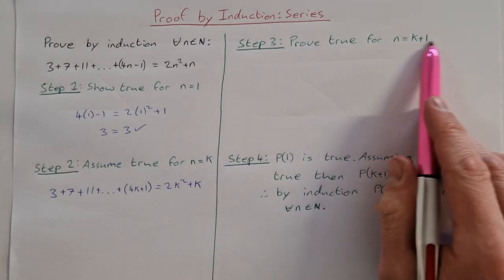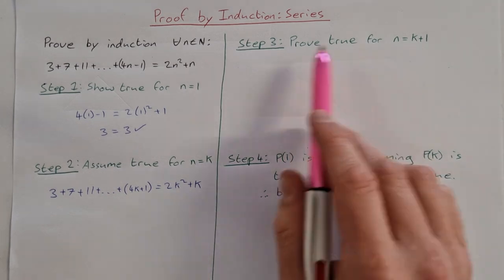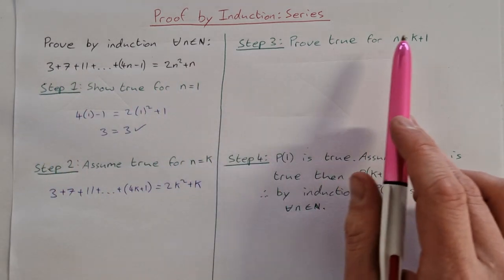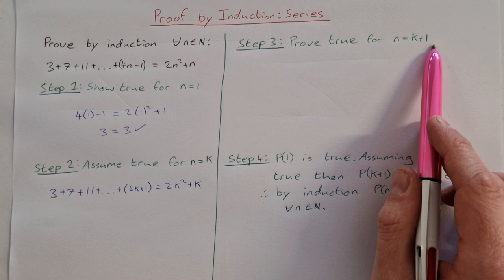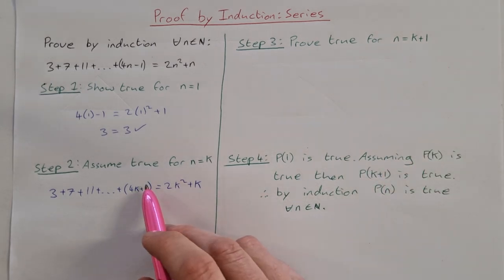Step 3, prove true for n equal to k plus 1. So in this step you write out your series again except you're going to put in k plus 1 instead of n, but we're also going to put in this term here before the k plus 1 term.